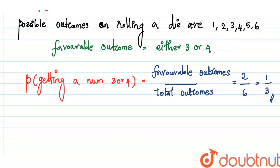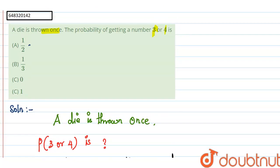So when we cancel, this is 1 by 3. One by three is the final answer. Probability of getting a number 3 or 4 is 1 by 3. Option B is the correct answer. Thank you.